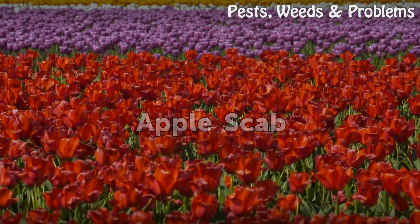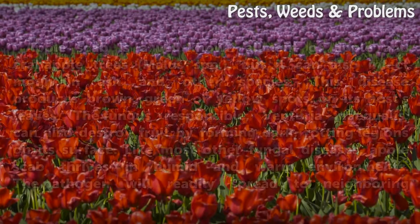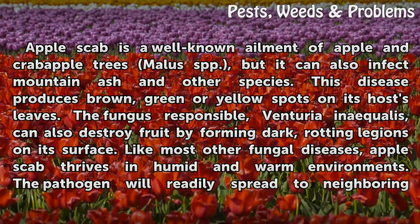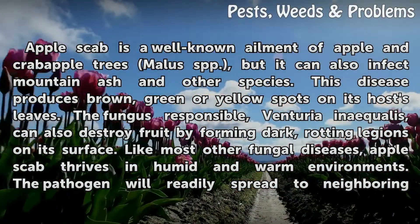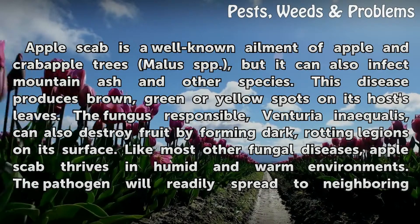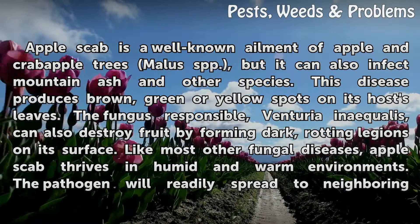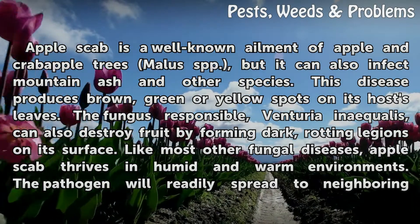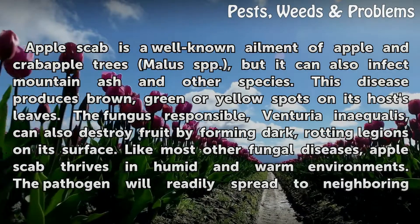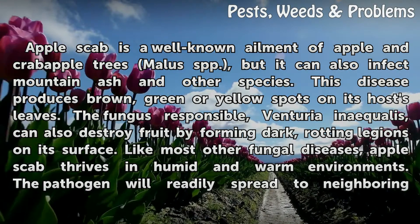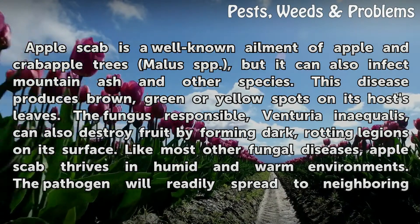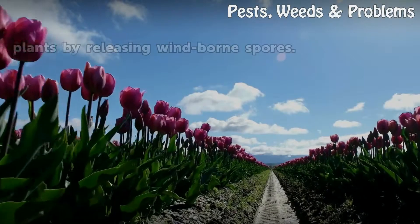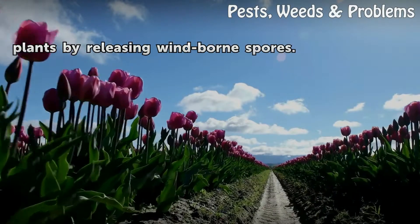Apple Scab is a well-known ailment of apple and crab apple trees, Malus spp., but it can also infect mountain ash and other species. This disease produces brown, green, or yellow spots on its host's leaves. The fungus responsible, Venturia inaequalis, can also destroy fruit by forming dark, rotting lesions on its surface. Like most other fungal diseases, apple scab thrives in humid and warm environments, and the pathogen will readily spread to neighboring plants by releasing wind-borne spores.